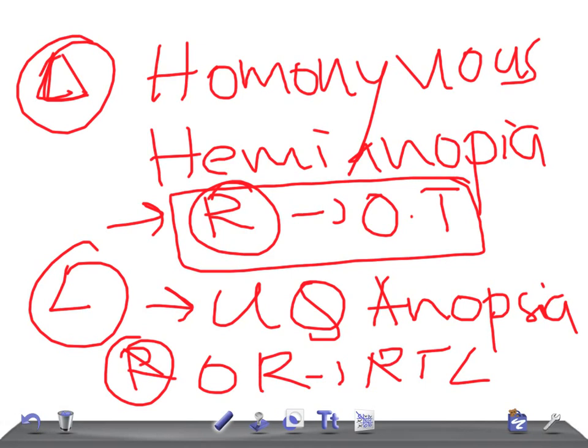Left homonymous hemianopia with macular sparing. Where do you see? Seen in right occipital lobe. Right occipital lobe. Okay guys, thank you so much for watching this video. Take care.